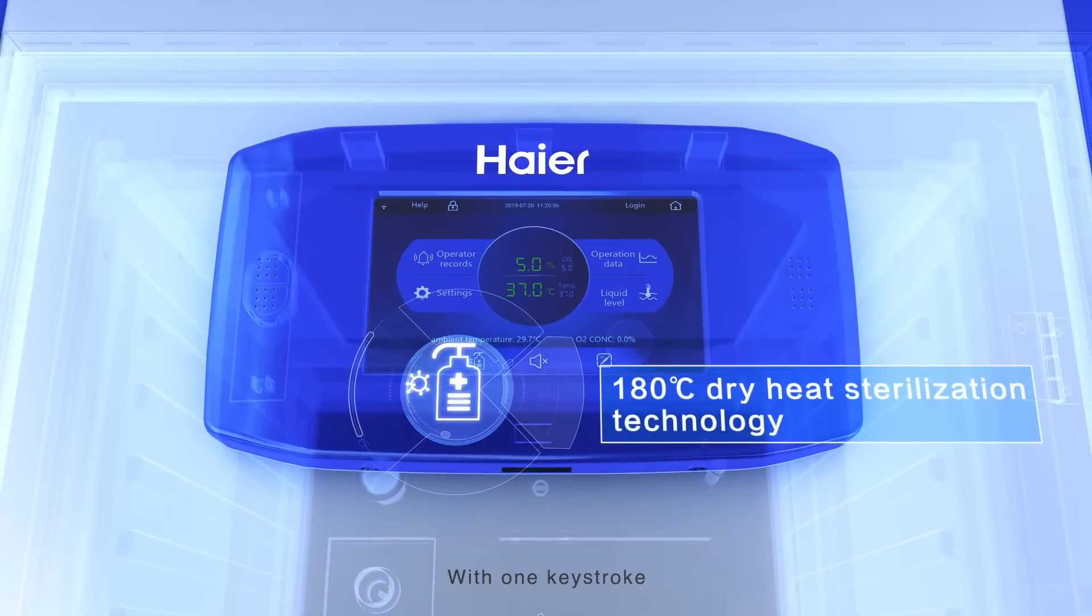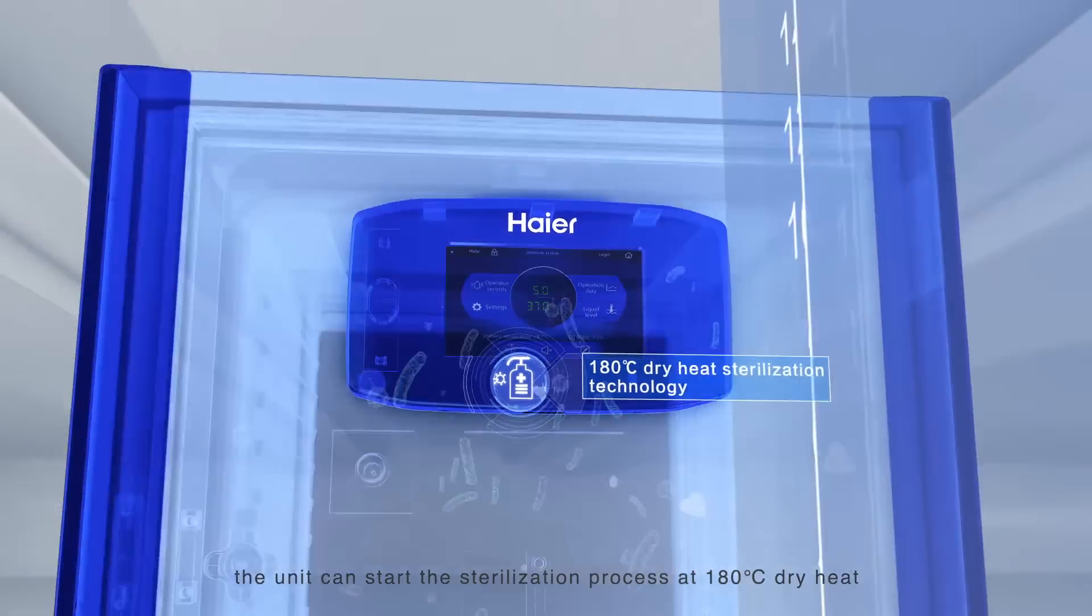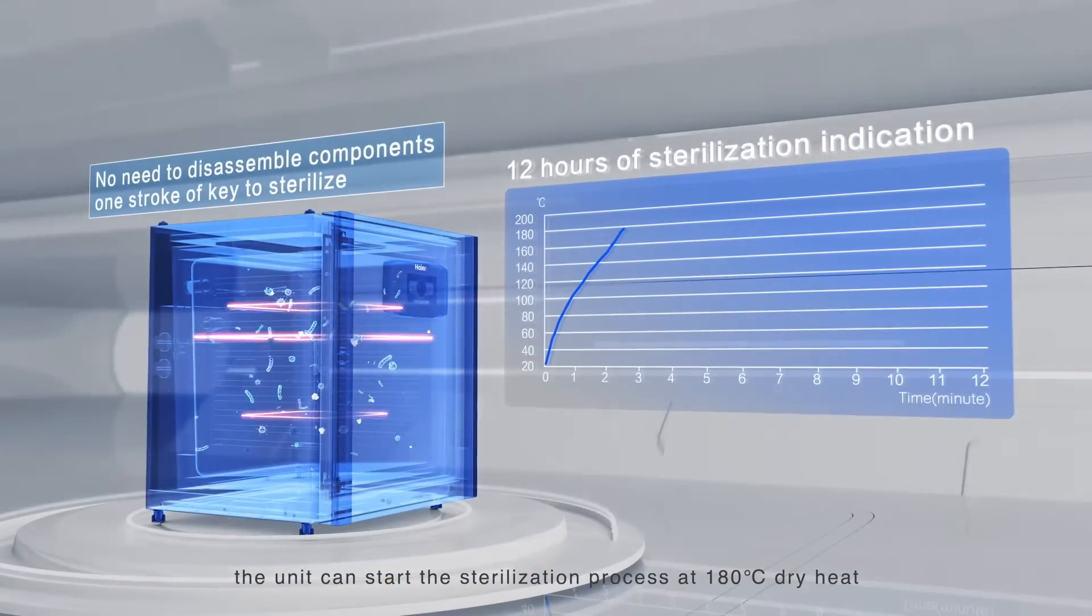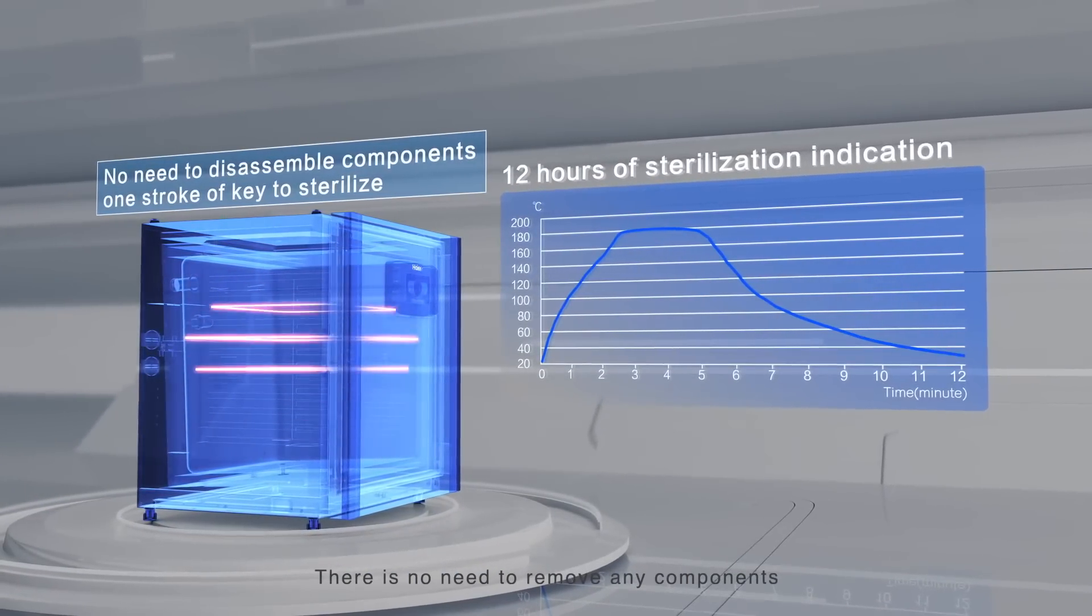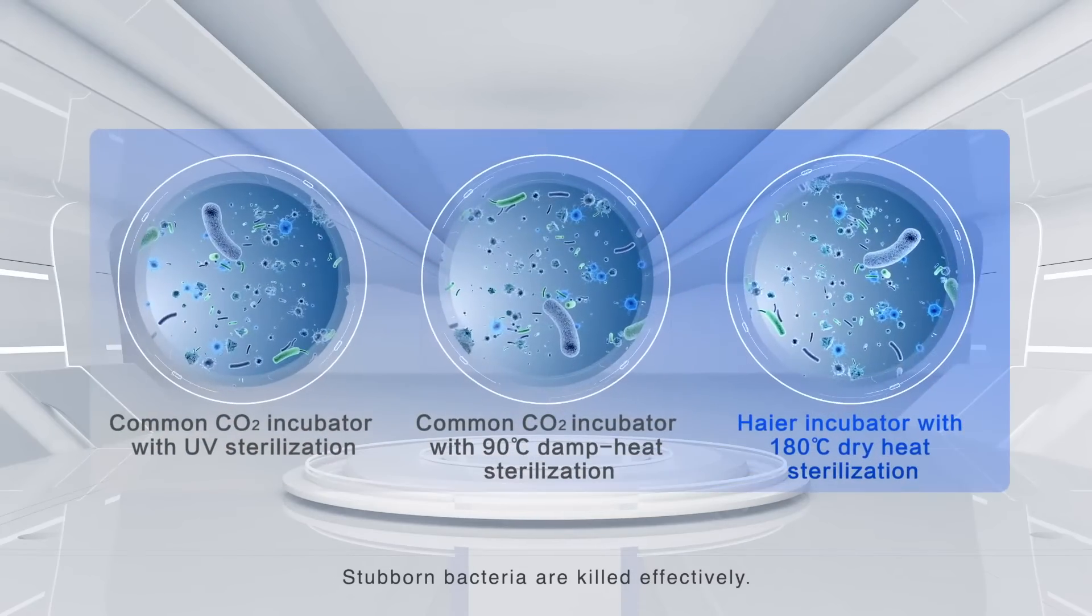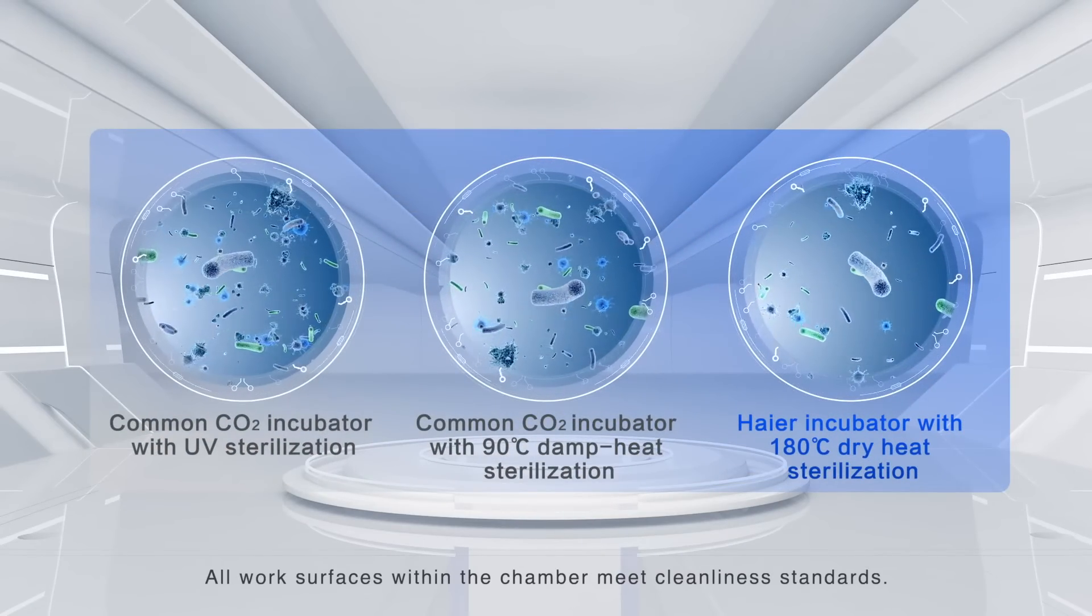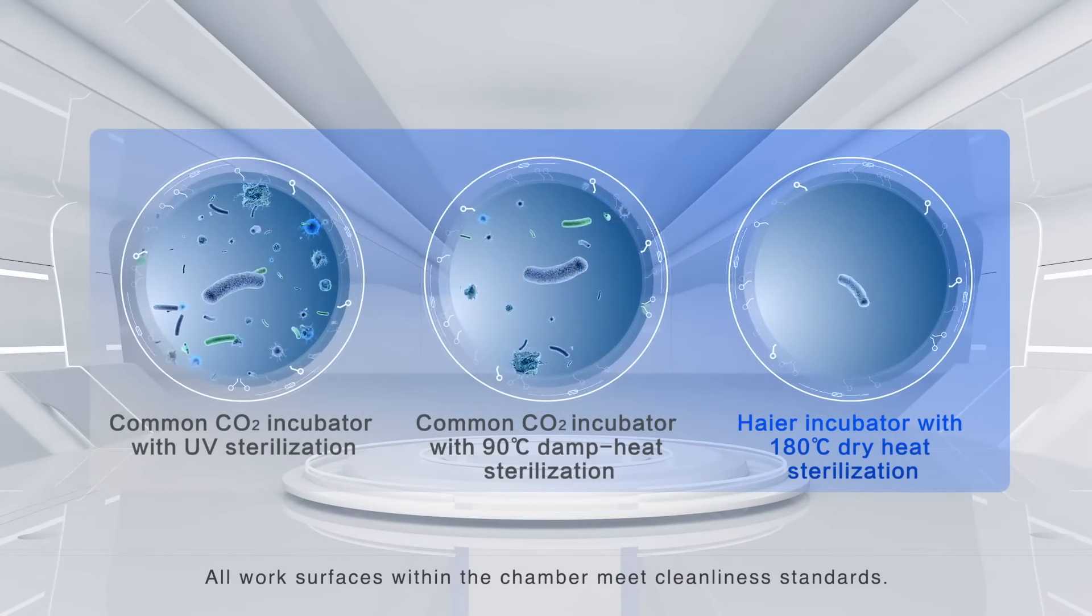With one keystroke, the unit can start the sterilization process at 180 degree Celsius dry heat. There is no need to remove any components. Stubborn bacteria are killed effectively. All work surfaces within the chamber meet cleanliness standards.